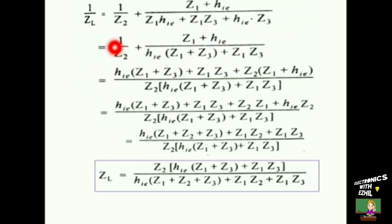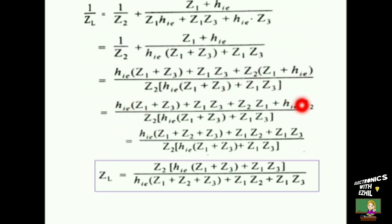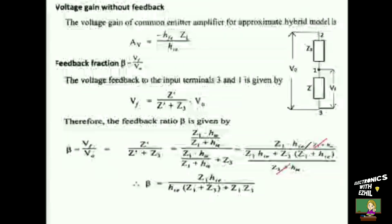Taking the LCM for the full expression for 1/ZL gives: Z2·Z1 + Z2·hie in the numerator, with hie taken commonly out between the first and last terms, giving hie·(Z1 + Z3 + Z2) plus the remaining terms — all divided by the denominator. This expression equals 1/ZL. Since ZL is the load impedance, we take the inverse of this expression: the numerator becomes the denominator and the denominator becomes the numerator. This is the expression for load impedance ZL.